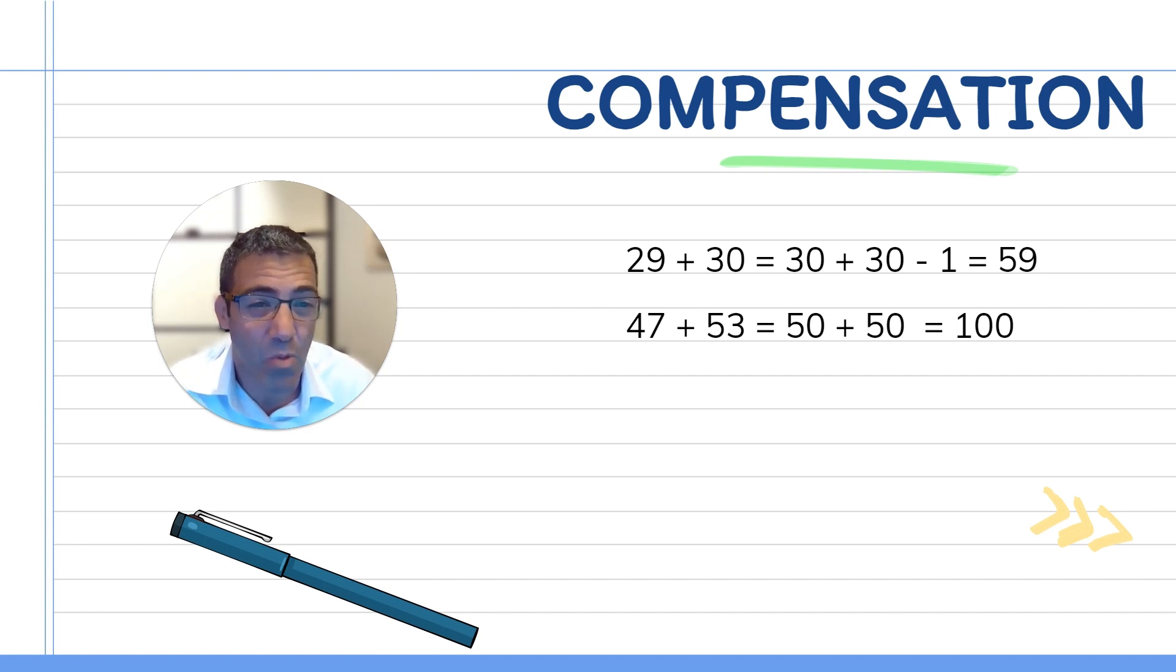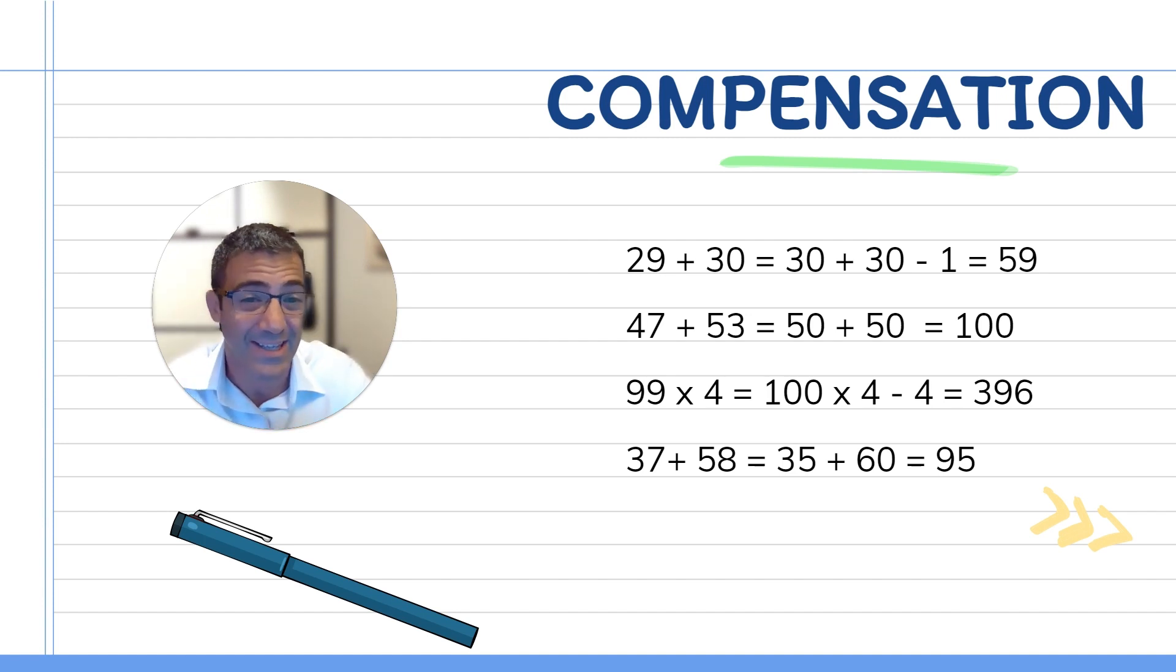You could also work with more complicated operations like 47 plus 53. Perhaps here, if you recognize that seven and three are friendly numbers and they will make a block of 10, you can give three from the 50 to the 47 and therefore say that this is 50 plus 50 and this is 100. You can also extend compensation beyond first grade to operations like 99 times 4, which you might encounter in fourth and fifth grade. You can say that's 100 times 4 as long as you take away 4. This is a strategy which you can extend and compensation strategy can be very, very useful. You can also borrow from the first number and give it to the second number. If you have a quantity like 37 that needs to be added to 58, you can give two from the 37 to the 58 to make a nice block of 60. That'll be easy because it's 35 plus 60, which gives you 95.